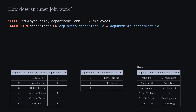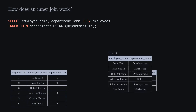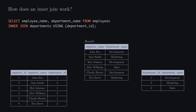Since the join condition depends on the equality of the department ID, which has the same name in both the employees and departments tables, we can also use the USING keyword followed by the common field name in parentheses. When we run our SQL command to get the details for the employees and their departments, we get the corresponding result rows.